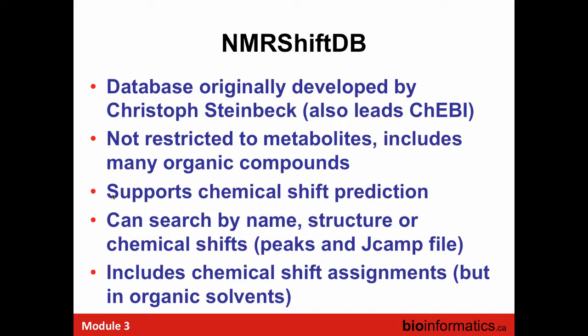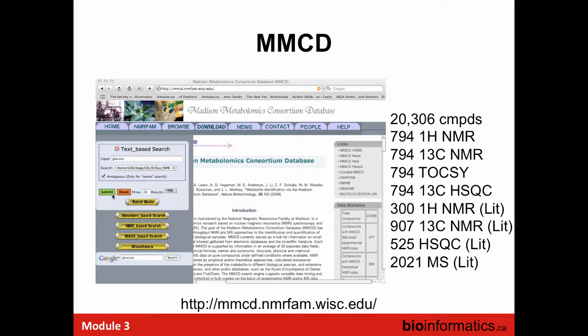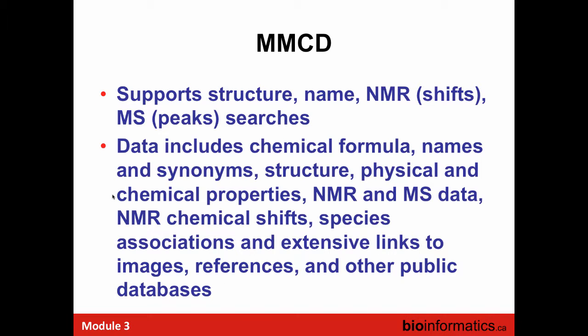NMRShiftDB is still a large resource — it allows people to help with assignments and has a chemical shift prediction tool where you can upload a compound and it will predict your NMR spectra for free. MMCD, developed at Wisconsin, collected NMR spectra from BiomagResBank and supplemented it with mass spec data — about 2,000 metabolites with mass spec data. Not well known, but it's a resource you can potentially use to create your own library. You can search by peaks and chemical shifts, chemical formulas, names, synonyms, species information, and references.